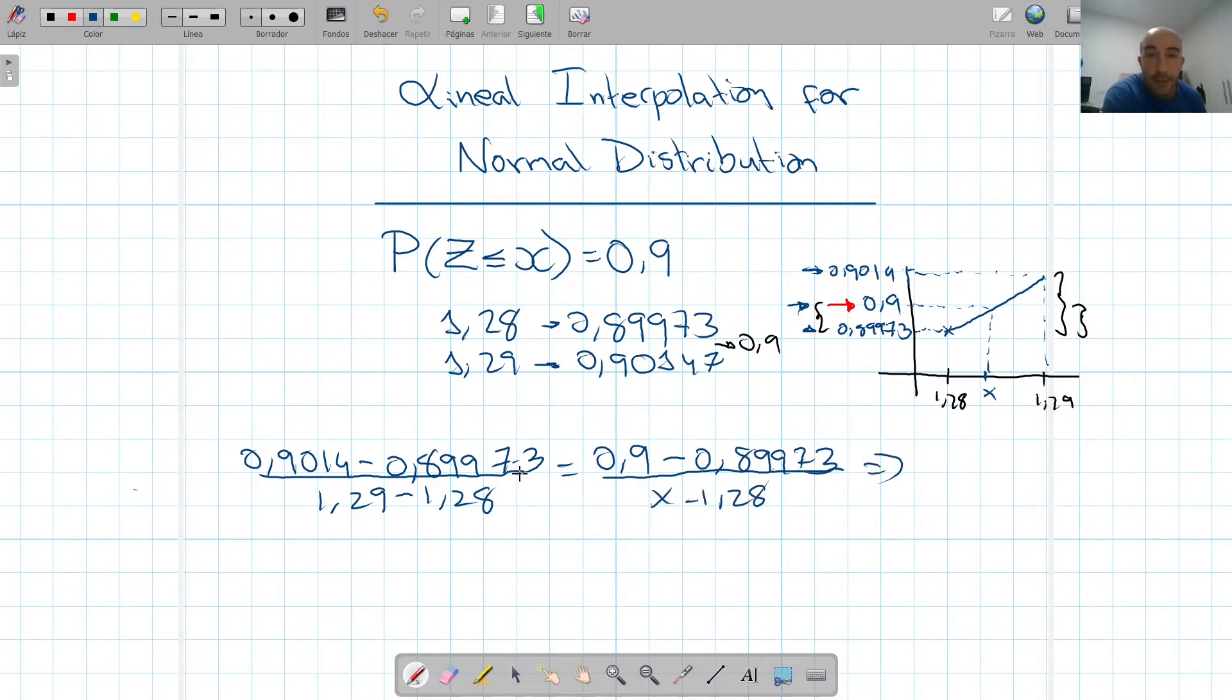Now, I know that your calculators can do this and solve for x, but I'm going to do the calculation so that you can see what we're doing. So if we have 0.90147 minus 0.89973, that's this. Obviously, I don't need a calculator for this. This is 0.0...